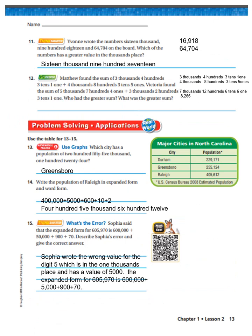Number eleven: Yvonne wrote 16,918 and 64,704 on the board. Which number has a greater value in the thousands place? I wrote both numbers and compared the thousands place — ones, tens, hundreds, thousands. The number with the bigger digit in the thousands place is sixteen thousand nine hundred and eighteen.